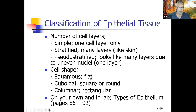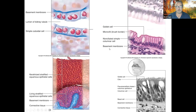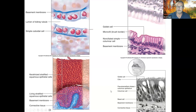Looking at shapes: squamous is flat — like looking at a fried egg on edge. Cuboidal is square or round, and columnar is rectangular. These images show cuboidal cells (somewhat square), columnar cells (taller than wide), stratified squamous (flat with multiple layers), and pseudo-stratified from inside the nose — it looks like many layers but it's just that some nuclei are high and some are low, with a single basement membrane and single apical surface.